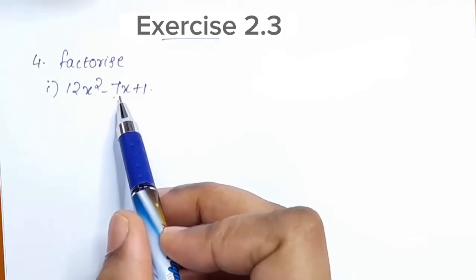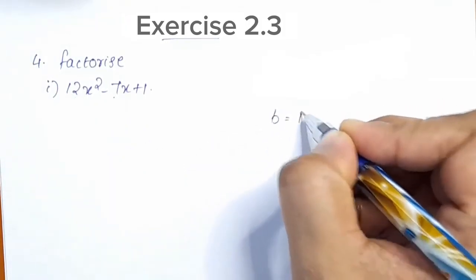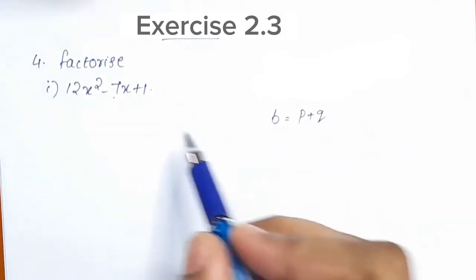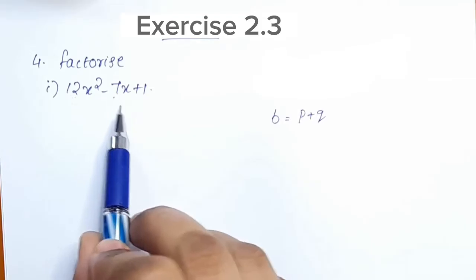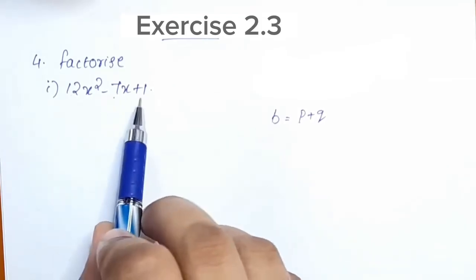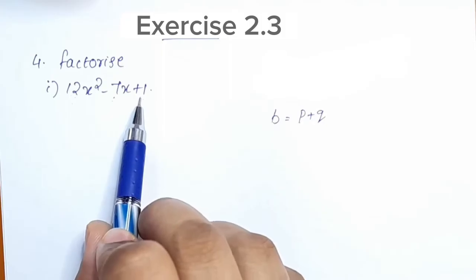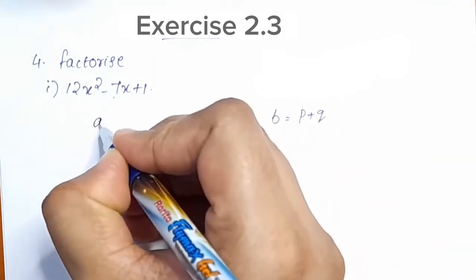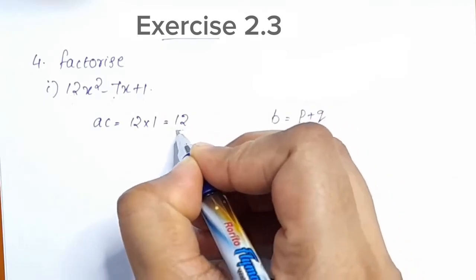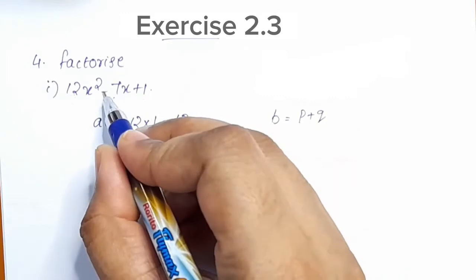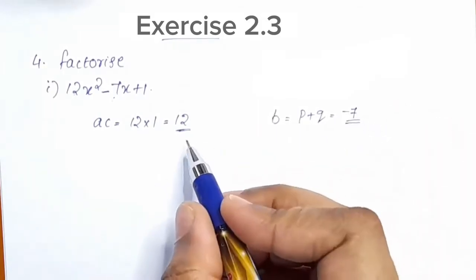b is negative 7. b is equal to p plus q — that is, we split b into two numbers p and q. If we add p plus q we get negative 7. We will multiply them to get a·c, which is 12. We need to find factors of a·c.